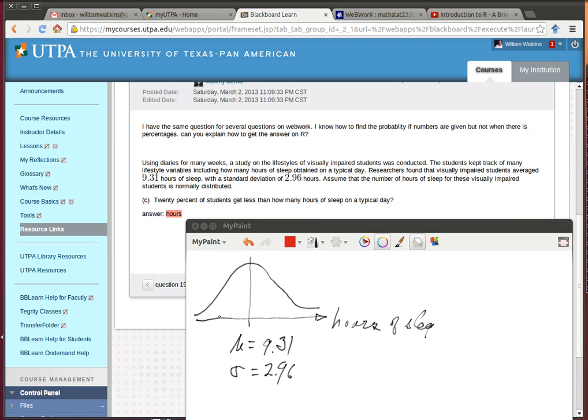So if we want 20%, it's going to be down here somewhere. So there's some number here that we're looking for. I'm going to call it Q for right now, the quantile.